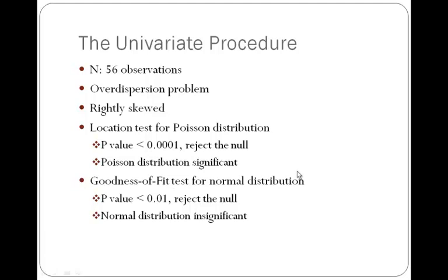Looking at the location test for Poisson distribution, the p-value is very small — much less than 0.0001. The null hypothesis is that the data is not from a Poisson distribution, and we reject the null. So the Poisson distribution in this case is significant. I also examined the goodness-of-fit test for normality. The null hypothesis is that the data is from a normal distribution, and the p-value is less than 0.01, so we reject the null. I conclude that the data is not from a normal distribution and instead follows a Poisson distribution.